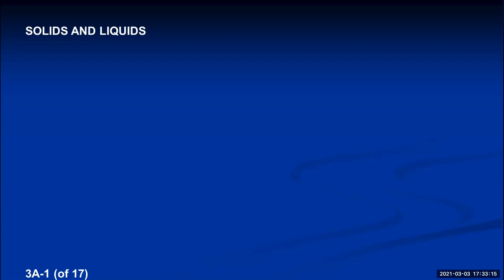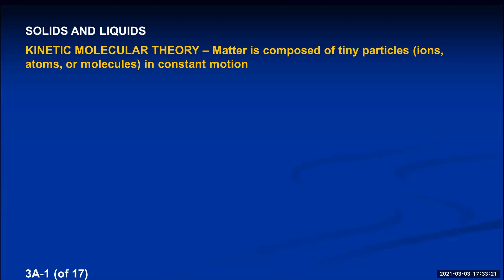This next unit will start off by talking about the phases of solids and liquids. We can describe the phase of matter - solid, liquid, or gas - using the kinetic molecular theory. It assumes matter is composed of tiny particles, which is a wonderful assumption because matter is indeed composed of tiny particles, and that these tiny particles are in constant motion - thus the word 'kinetic.'